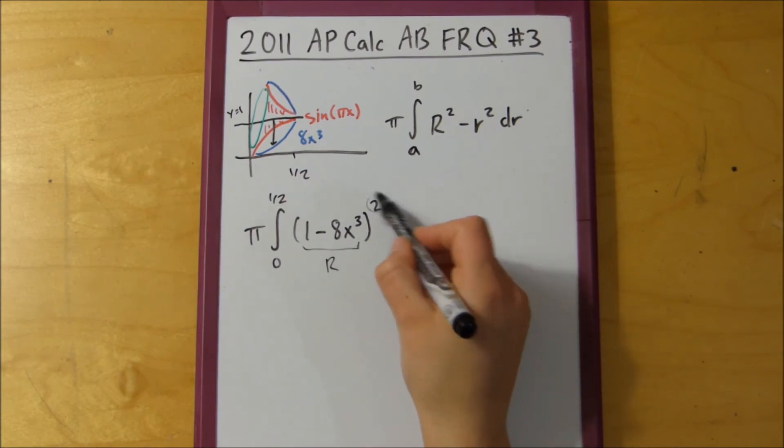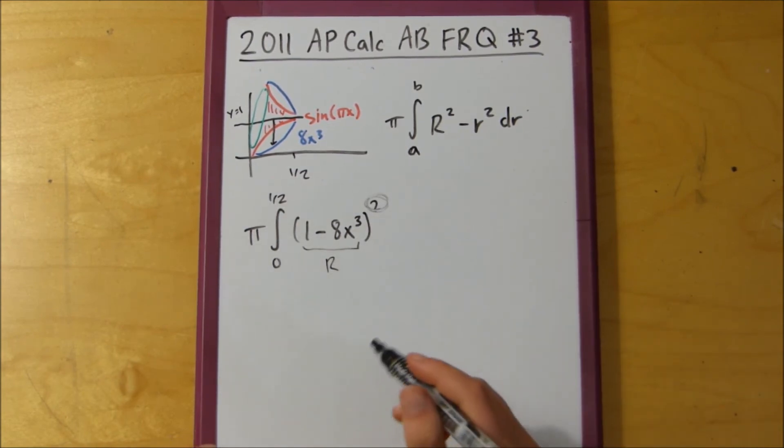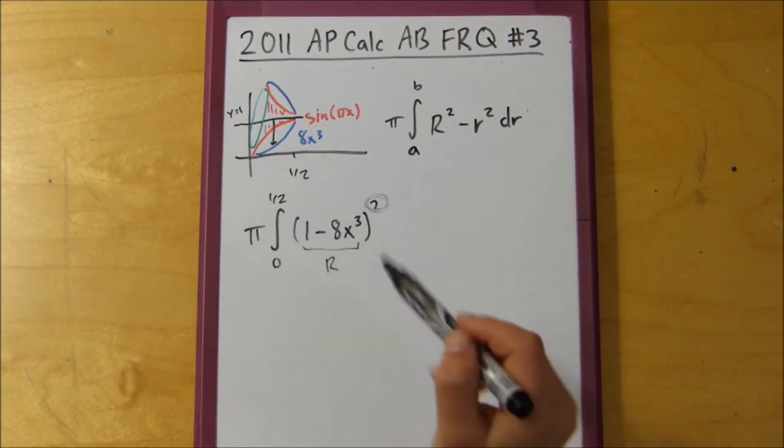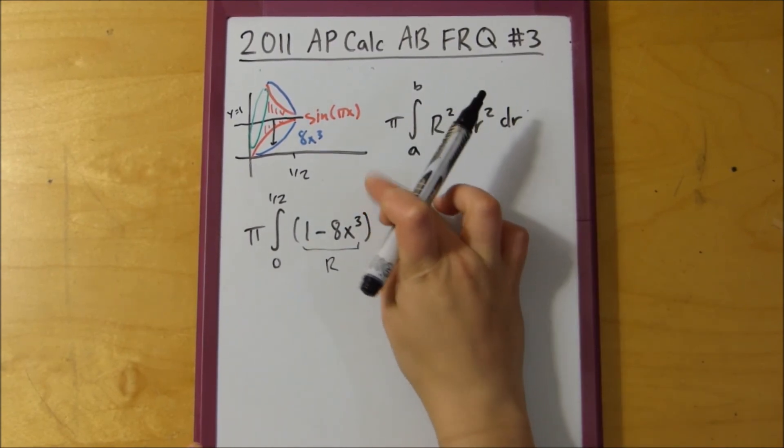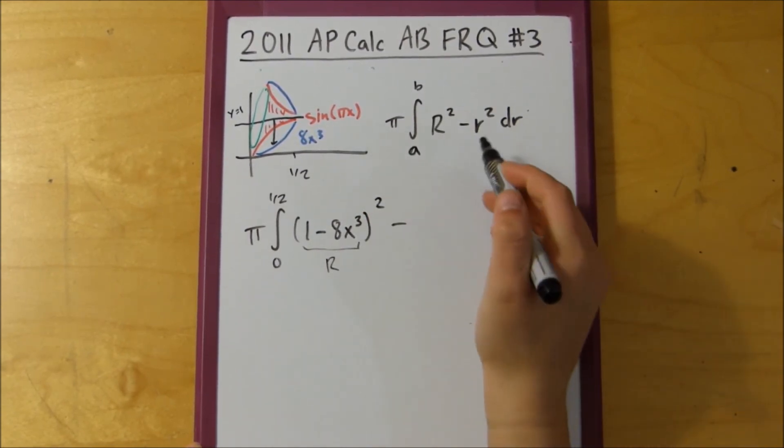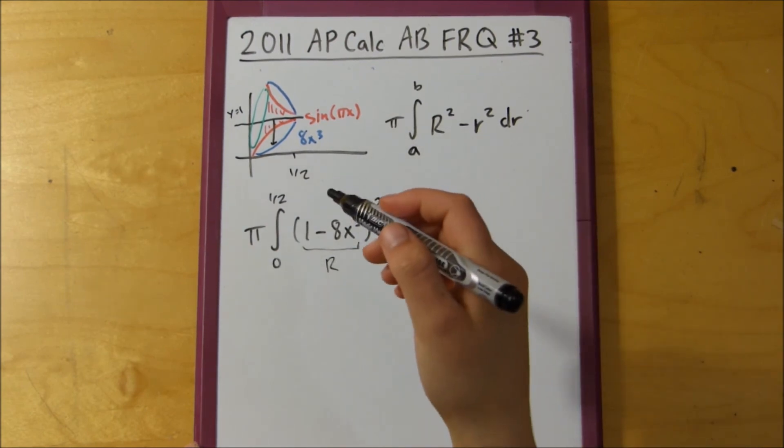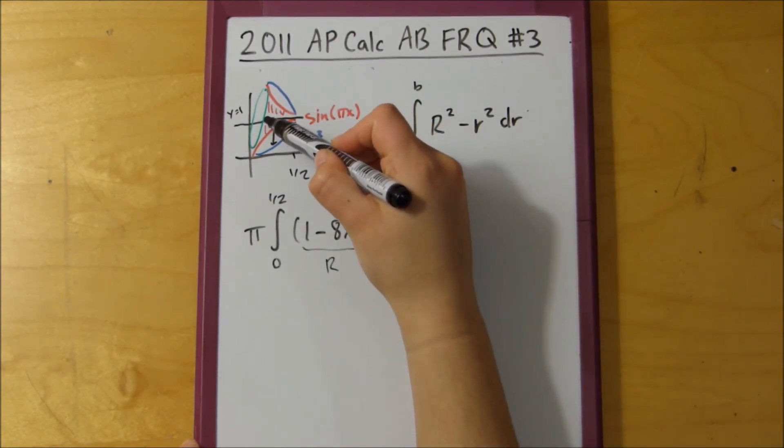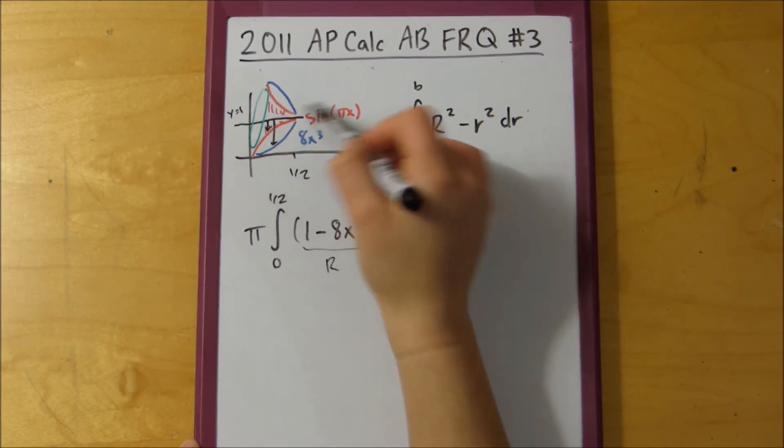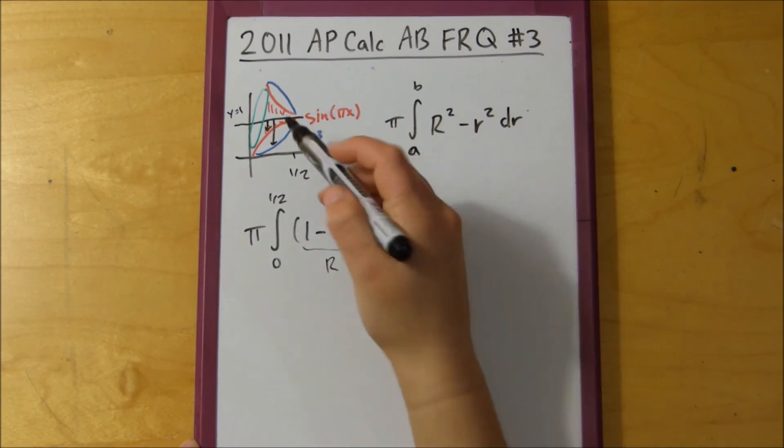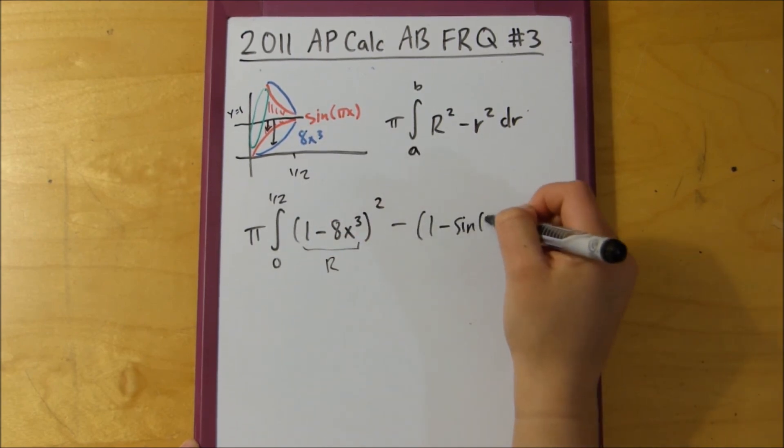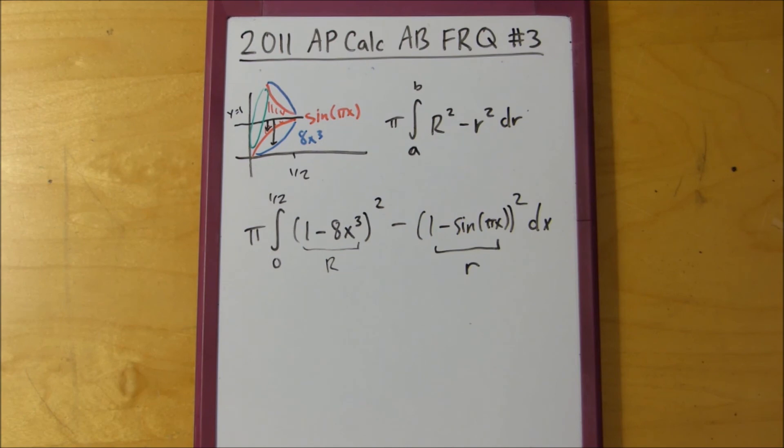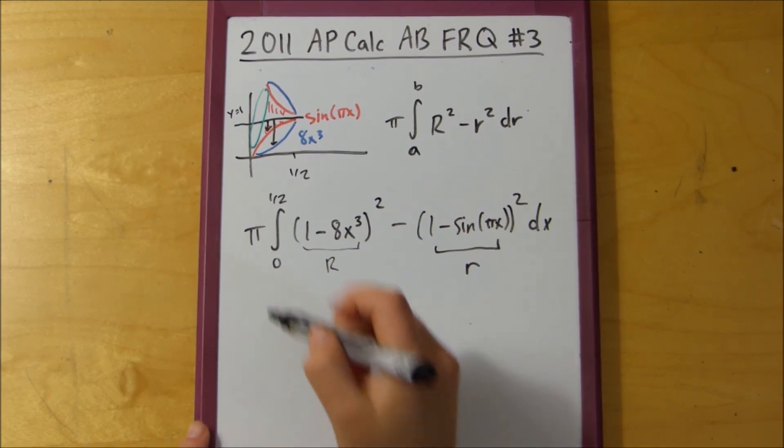This is an important step. Sometimes if you have a function that is already squared, you might forget to put in that squared, but this squared is really important. And then we subtract our little radius, and for the little radius, what I like to do is I take the line that we're revolving around, and I draw it down to the second function. So it would be top minus bottom, so 1 minus sine of pi x, all of that squared dx. So this is our little R. And then since it says write but do not evaluate, this would be our final answer.